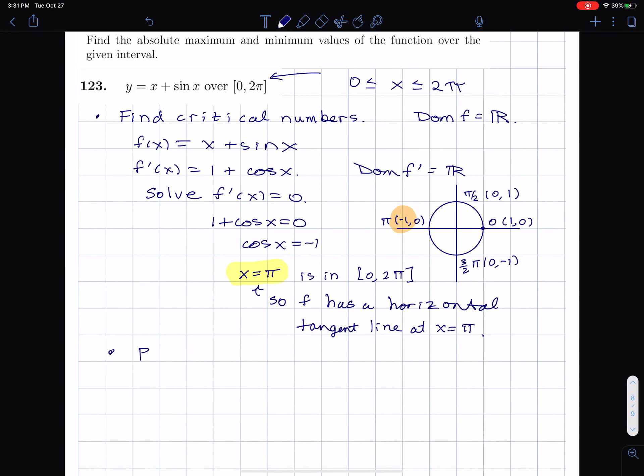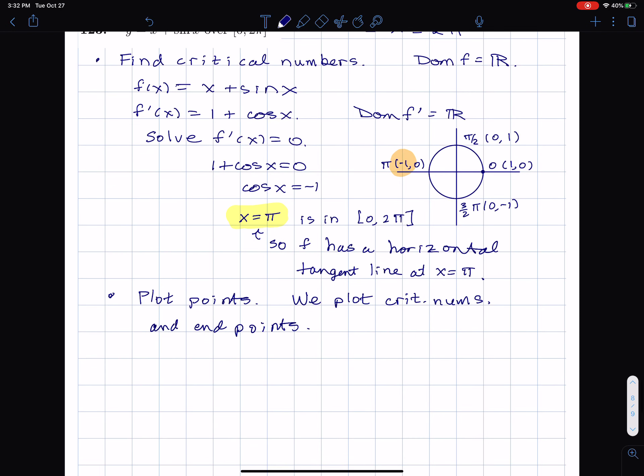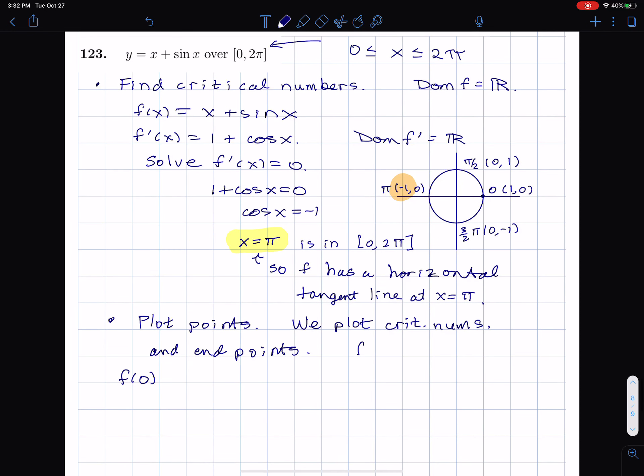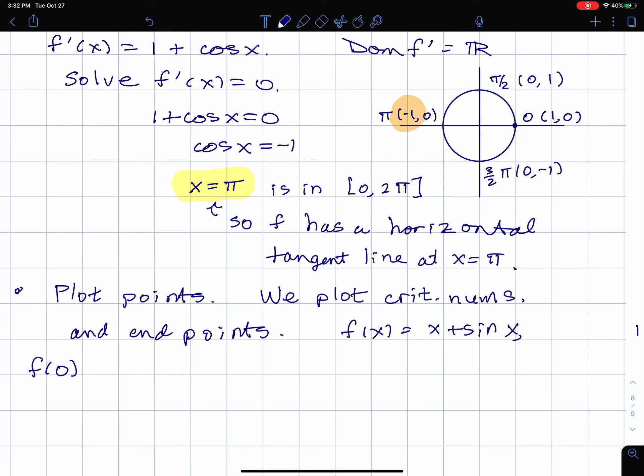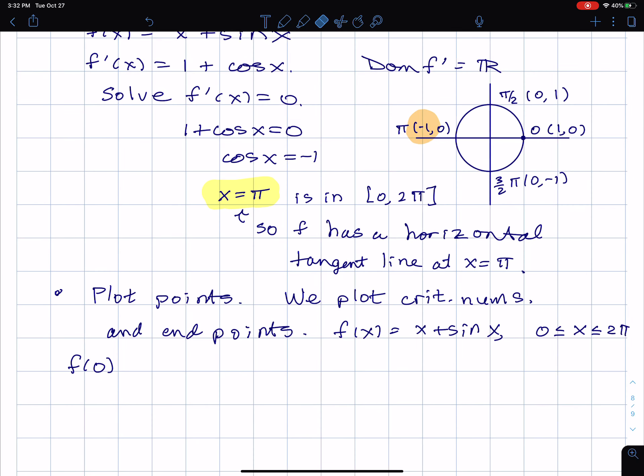Okay, now what we're going to do is we're going to plot points. So we just put points in, but which points do we plot? We plot critical numbers, which some people might call critnums, even though that's maybe sort of too cute. We plot critnums and endpoints. So what I mean by endpoints is I look at f of 0. So let me just remind ourselves that f of x equals x plus sine x, where we're looking for x between 0 and 2π.